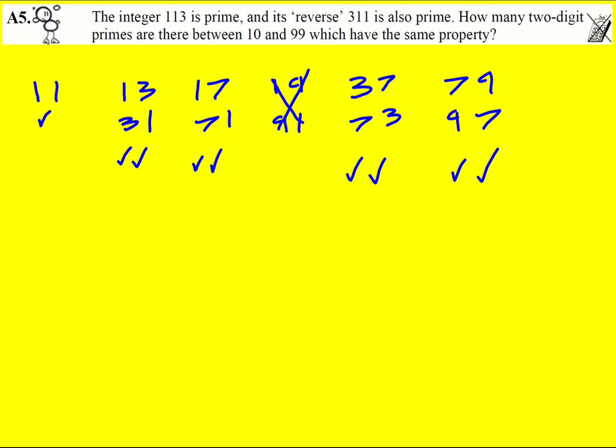So you have to know your primes in this question quite well or you could of course write out a big long list of them but hopefully you're happy how I've done it. So how many are there? Let's just add them up. That's going to be 9 in total. Nice one.